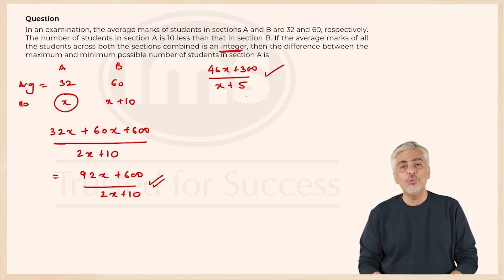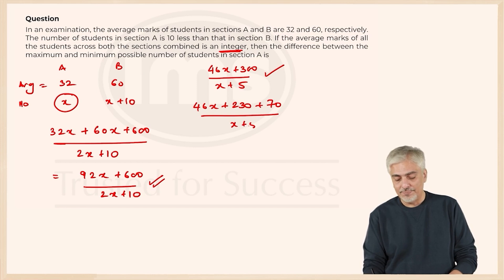Now pause this - how do you solve this? I want to find the maximum value of x and the minimum value of x. You can write the numerator as 46x plus 230 plus 70 divided by x plus 5. This was a very difficult step to think of. Once you think of it: 46 into x plus 5, plus 70, both divided by x plus 5 separately.